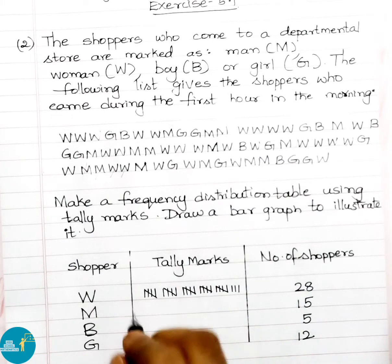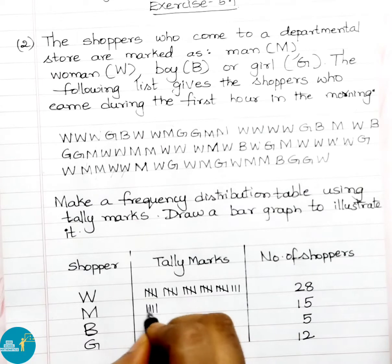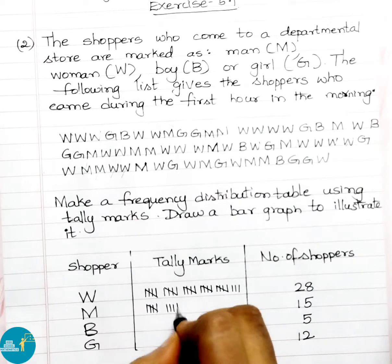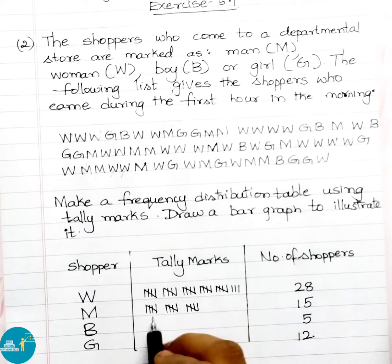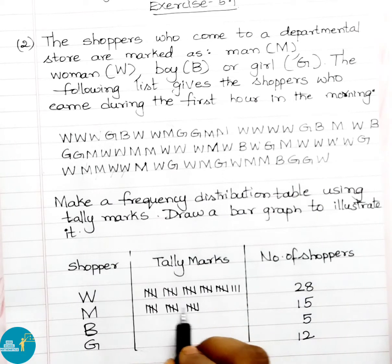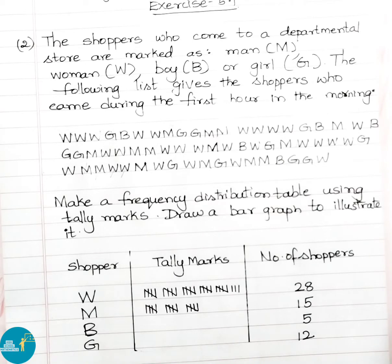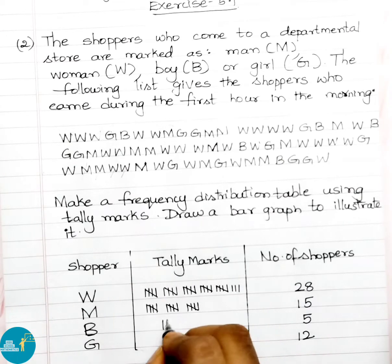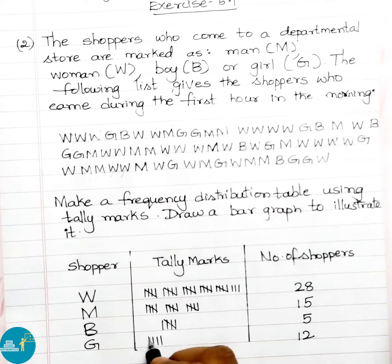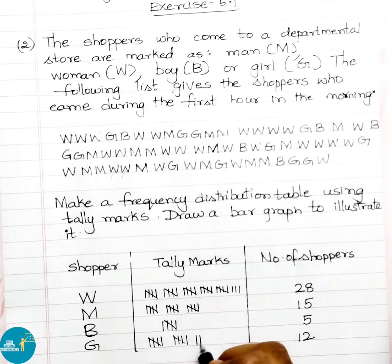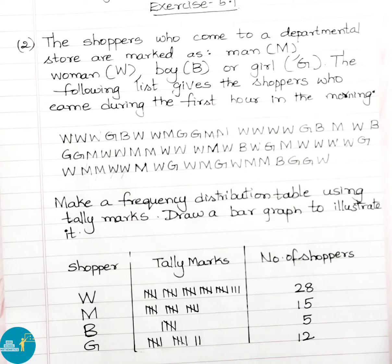Next, men they have given as 15, represented as three groups of 5 tally marks. Boys have only 5 members, represented as one group. Girls are given as 12 — we represent this with tally marks: one group of 5, another group of 5, then 2 more, giving us 12 tally marks in total.